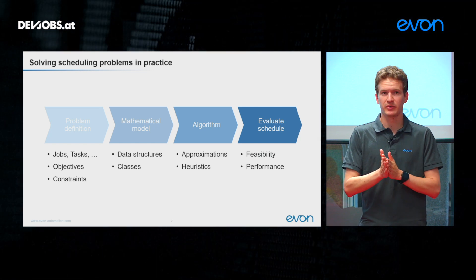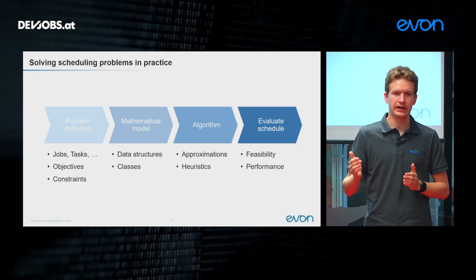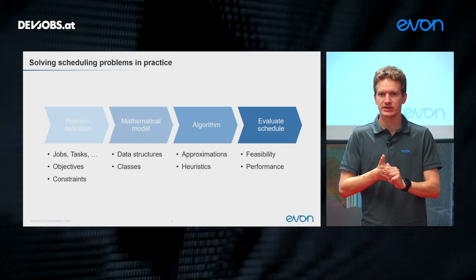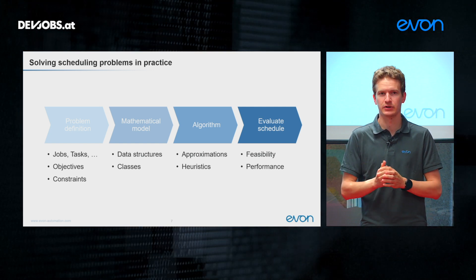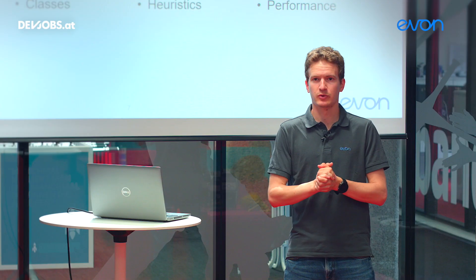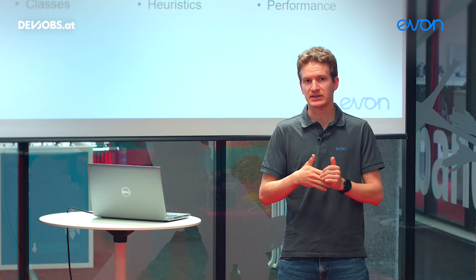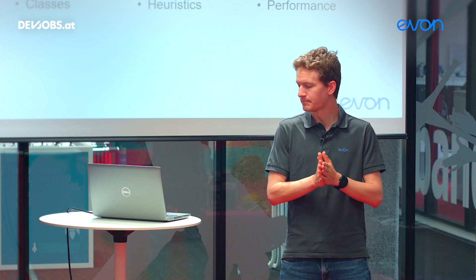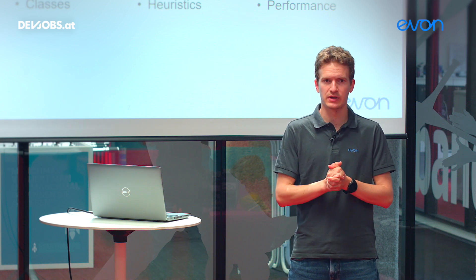The problem definition is critically important. If we define our objectives imprecisely, we may end up with a schedule that is optimized — but for the wrong objective. Even worse, if we forget some constraints, our schedule may fail to satisfy them in practice and cannot be executed. So problem definition is really a crucial part of the whole process.